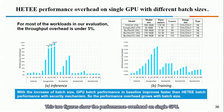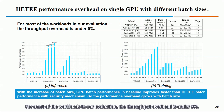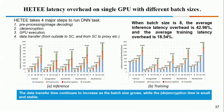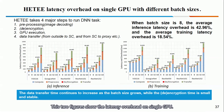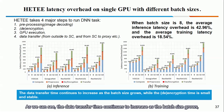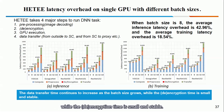These two figures show the performance of HDT on a single GPU. For most workloads in our evaluation, the throughput overhead is under 5%. With the increase of batch size, GPU batch performance in the baseline improves faster than HDT batch performance with security mechanisms, so the performance overhead grows with batch size. These two figures show the latency overhead on a single GPU. When batch size is 8, the average inference latency overhead is 42.96%, and the average training latency overhead is 18.54%. The data transfer time continues to increase as batch size grows, while the decryption time is small and stable.